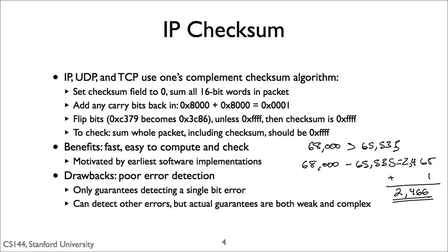Then, if you add up the complete packet including this checksum value, you should get 0xFFFF — all ones. There's one edge case: if the computed checksum is all ones, you don't make the checksum field 0, you make it all ones. In IP, UDP, and TCP, a checksum field of 0 means there's no checksum. That's it. You can write this in just a few lines of C code. It's fast, easy to compute, and easy to check. All you need to do is add the bytes of a packet and check that the checksum is all ones. Given that most early internet implementations were in software, this is really helpful.